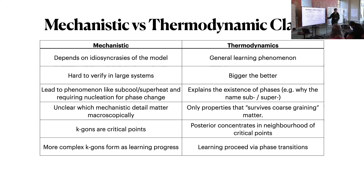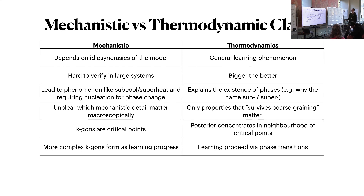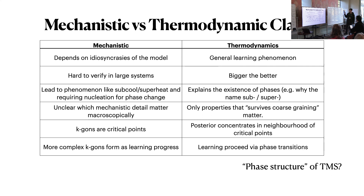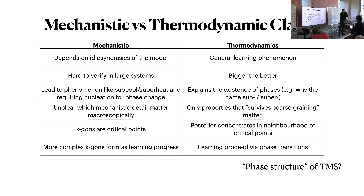Thermodynamically, an allowed transition need not occur — for example you can supercool water even though below a certain temperature thermodynamics says it has to turn into ice. It needs nucleation. Thermodynamics explains that you can call it supercooled in the first place. There is an expectation that it should be in some phase, but mechanistic details are preventing the transition. K-gons being critical points in TMS is a mechanistic claim. Don't go looking for regular polygons in large language models. But do test whether or not posterior concentrates in neighborhoods of critical points of other learning systems.